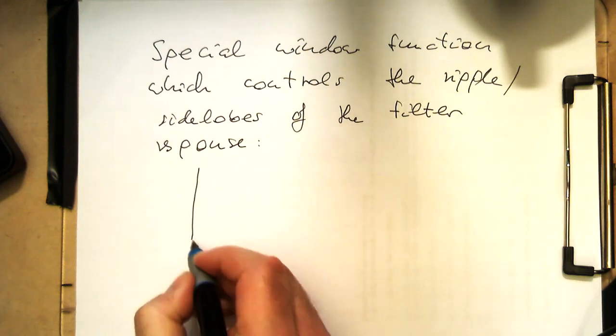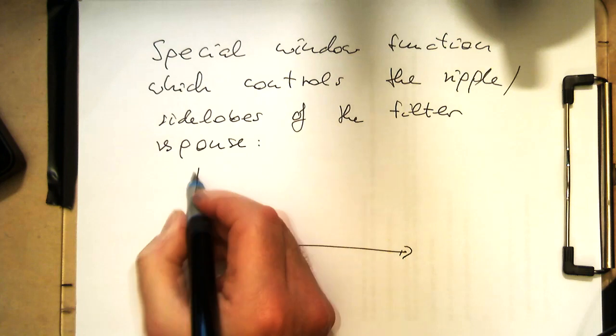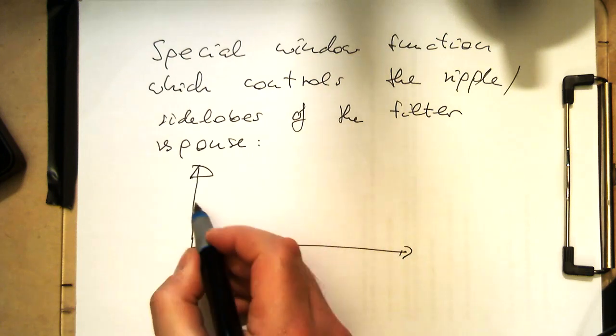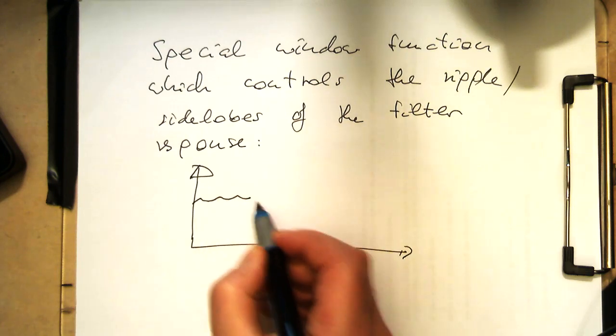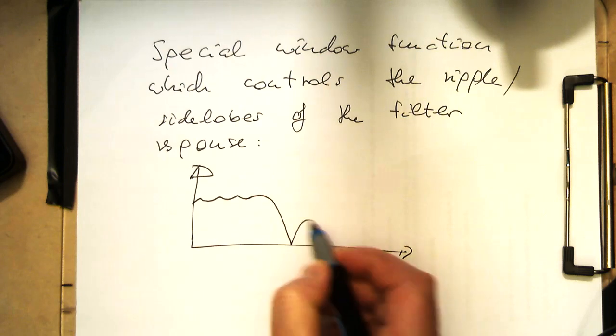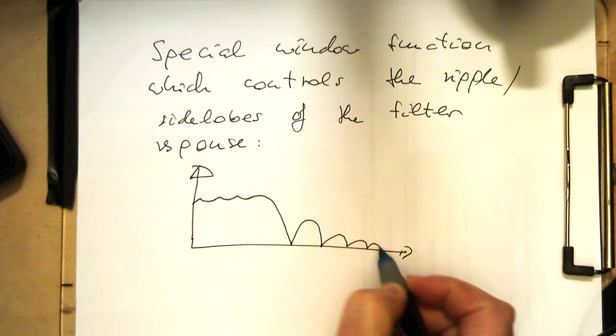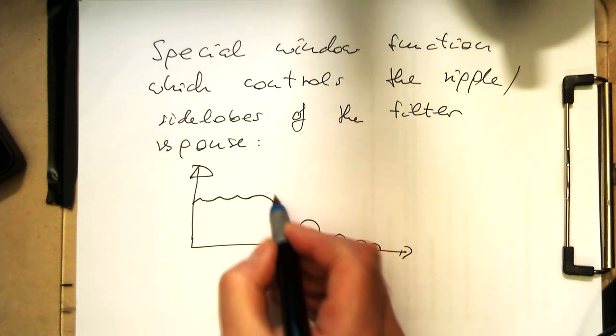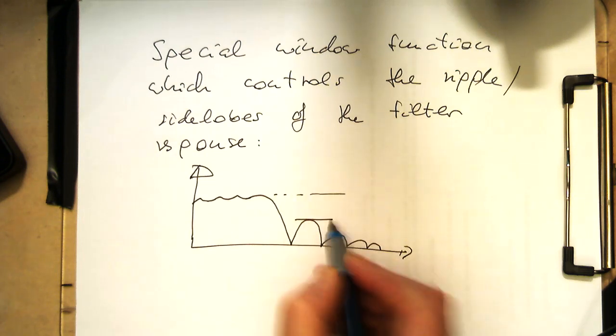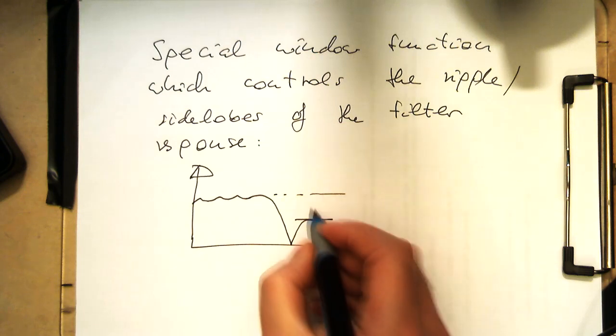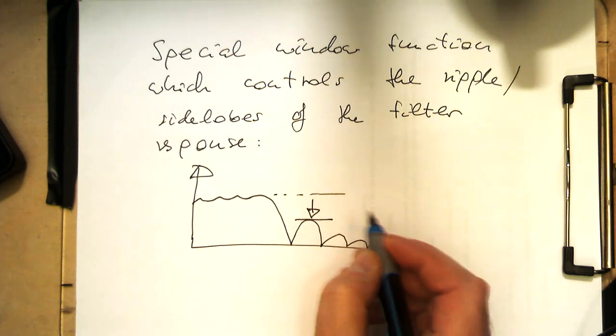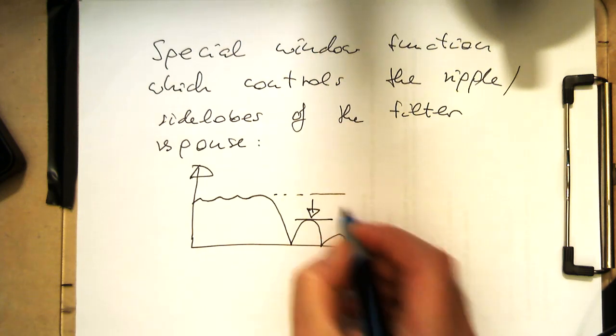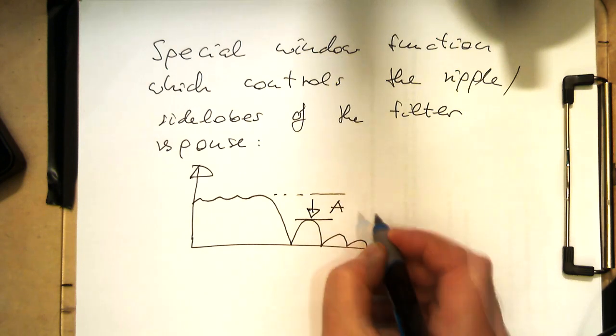Imagine we have a low pass filter response which goes like that, and we would like to make sure that this peak here goes definitely down at least by a decibel.